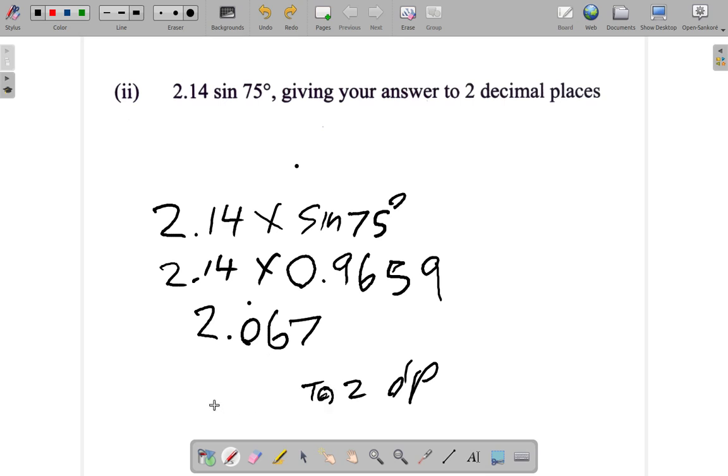So in this case, I will have 2.0 — zero is the first decimal place, then the second decimal place would be the six. But notice the number that follows the six is seven. As long as this number is five or more, you add one to the previous number. That's for improved accuracy. So therefore, my answer is 2.0 — add one to the six and get seven. So the answer is 2.07.